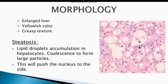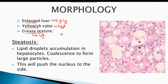The affected liver grossly appears enlarged. In certain cases the weight of the liver might range up to 5 to 6 kg. The liver appears yellowish due to accumulation of excessive lipid inside the cells. It also has a greasy texture, again due to accumulation of excessive fat inside the cells. Some micronodules might also be visible grossly in a cirrhotic liver.